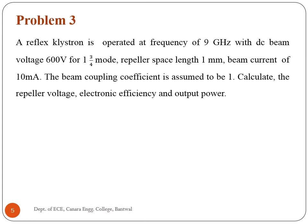Third problem: a reflex klystron is operated at frequency of 9 gigahertz with DC beam voltage 600 volts, for 1 and 3/4 mode, repeller space length 1 millimeter, beam current of 10 milliamperes. The beam coupling coefficient is assumed to be 1. Calculate the repeller voltage, electronic efficiency, and output power.